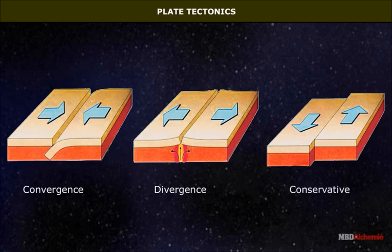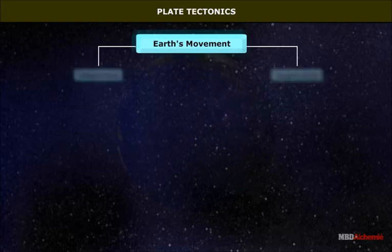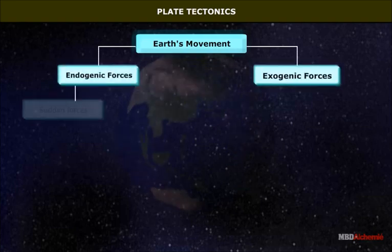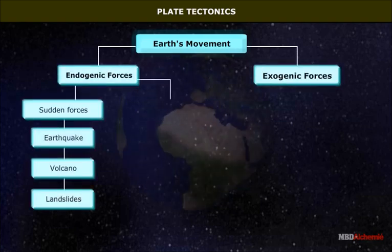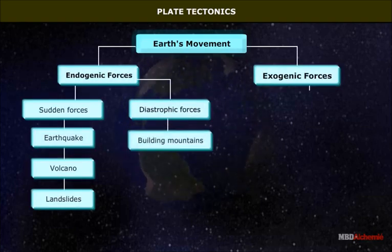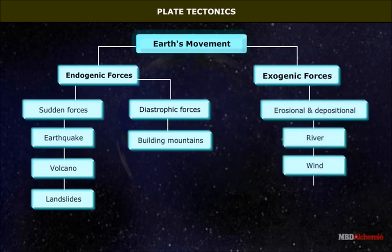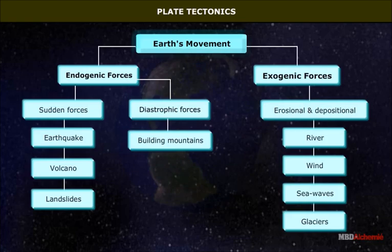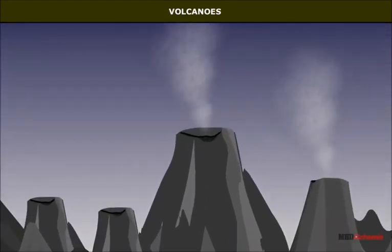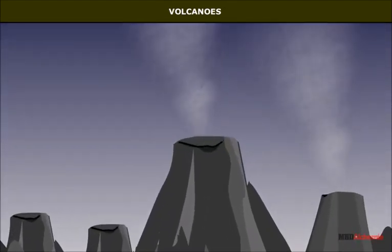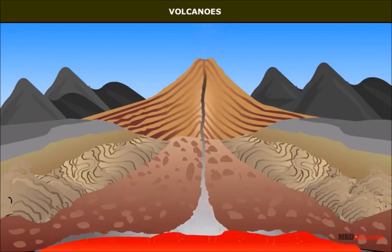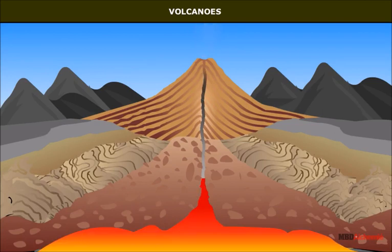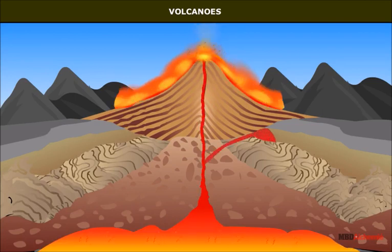These forces give rise to several processes of formation of landforms, which are best summed up under two main categories: endogenic and exogenic processes. Volcanoes — the molten rock material of the earth beneath the lithosphere, on which the tectonic plates float, is extremely hot.